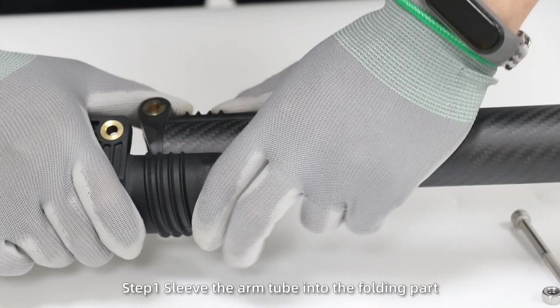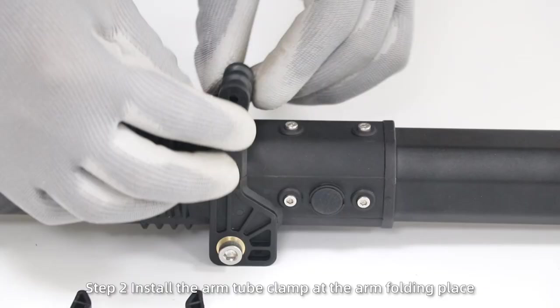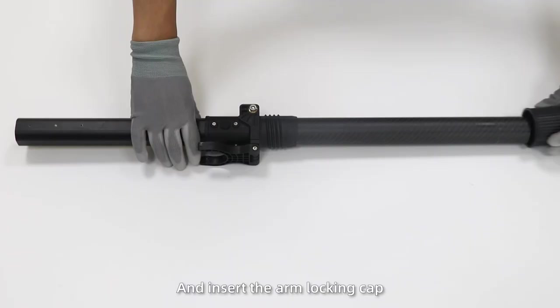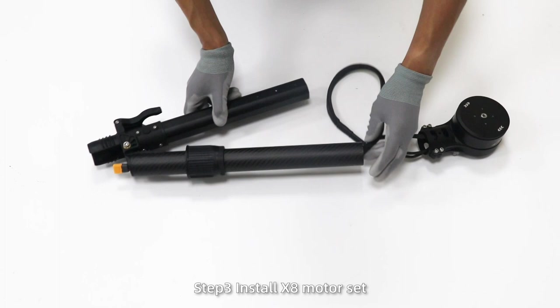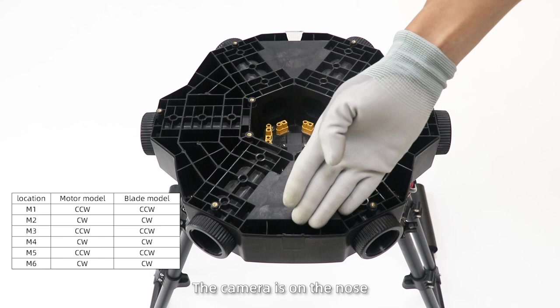Install the arm and motors. Step 1: Sleeve the arm tube into the folding part and fix it with screws. Step 2: Install the arm tube clamp at the arm folding place and insert the arm locking clamp. Step 3: Install X8 motor set. Pass the cables through the arm tube into the drone body and fix the motor to avoid falling off.